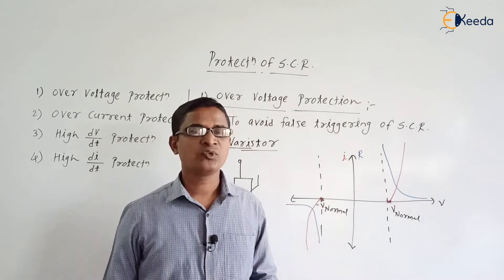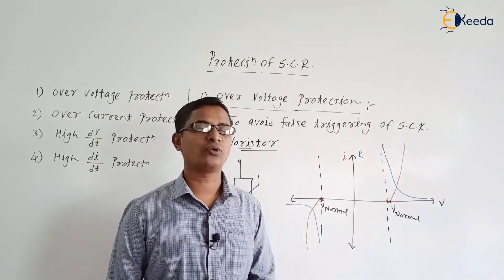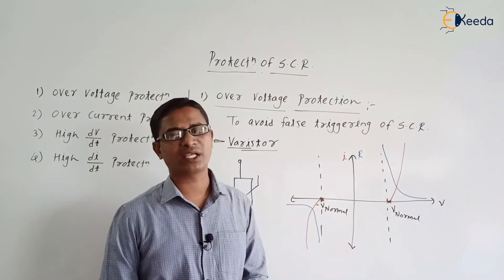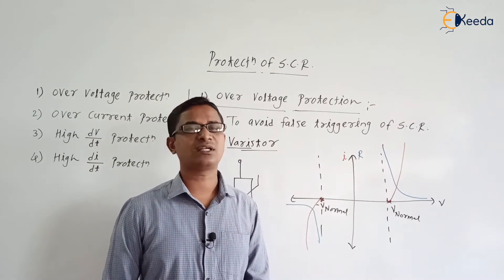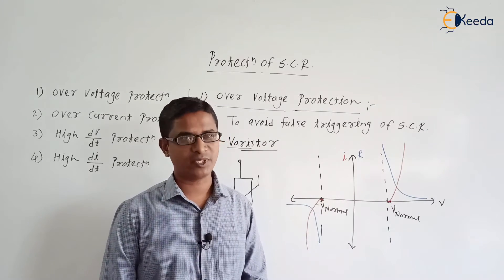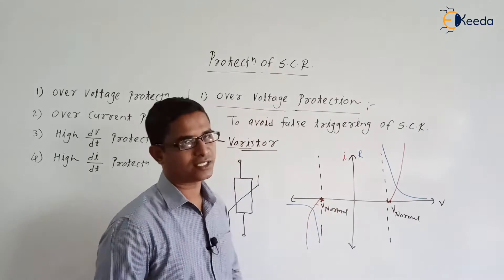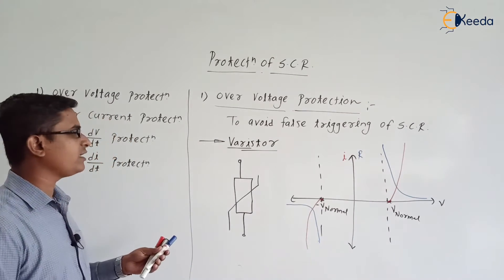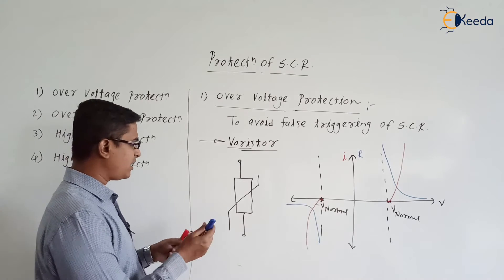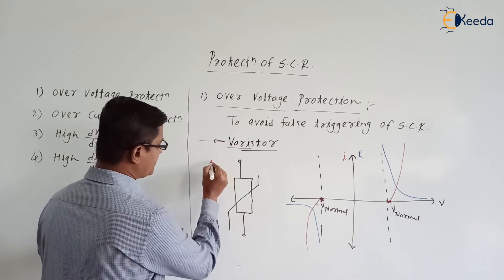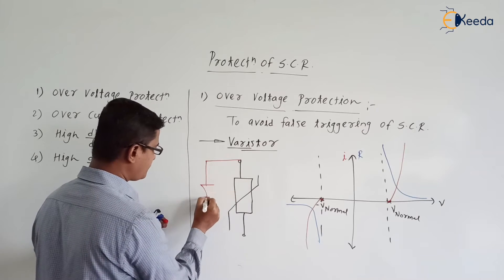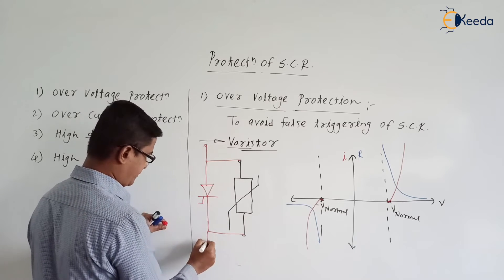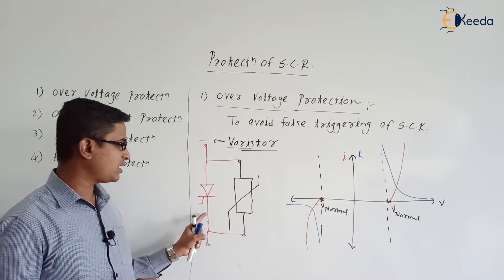So, the varistor is a variable resistor which offers very high resistance during normal working voltage. But if the voltage across the device increases beyond the normal working voltage, the resistance of the varistor decreases sharply. To protect the SCR against over voltage, the varistor is connected in parallel with the SCR.